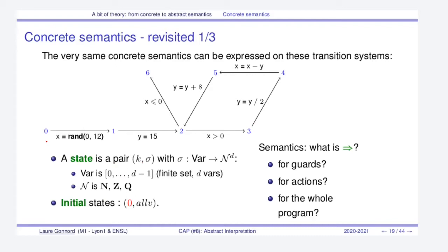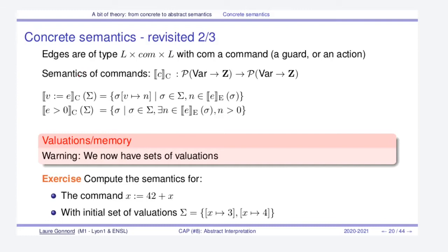On these transition systems we are able to express the very same concrete semantics, where we define the semantics of each single transition and then combine them to get the semantics of the whole program. A state is a pair of a given control point and a memory. Initial states are all possible values at the beginning control point, which is always zero. The question is how do we compute the counterpart of the former small-step semantics for guards, actions, and the whole program.